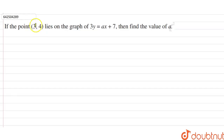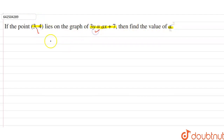Hi students, our question is: if the point (3, 4) lies on the graph of 3y = ax + 7, then find the value of a. So if this point lies on the graph 3y = ax + 7, we can say that this point satisfies the given equation.